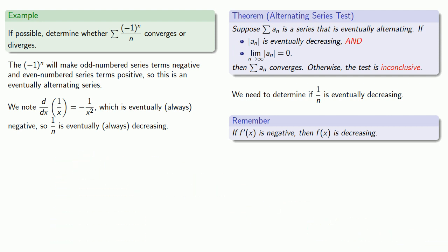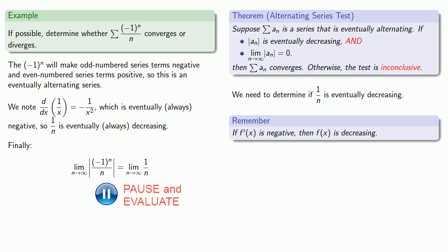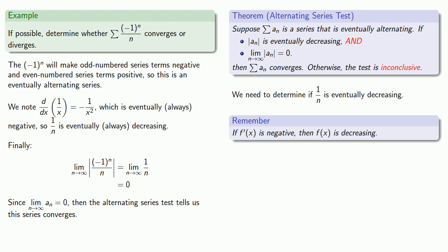Now we'll check the second requirement. We find the limit as n goes to infinity of the absolute value of our series terms. Since we're taking the absolute value, the (-1)^n just changes the sign, so we can drop it and find the limit. Since our limit is zero, we pass both requirements of the alternating series test, and so we know this series converges.